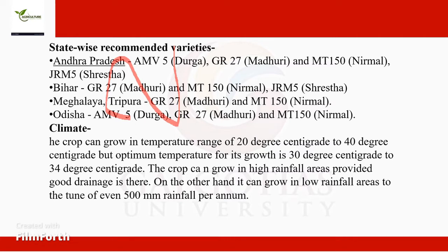Regarding the climate of mesta, the crop can be grown in temperatures ranging from 20 degrees Celsius to 40 degrees Celsius. The optimum temperature for its growth is 30 to 34 degrees Celsius. The crop can grow in high rainfall areas provided there are good drainage conditions.